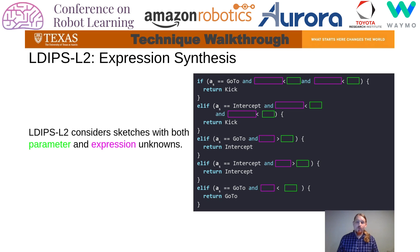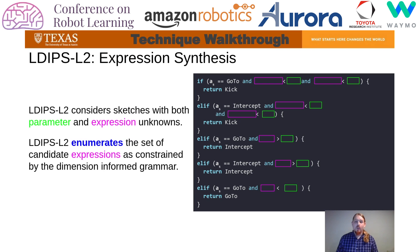At layer 2, LDIPS considers sketches with both parameter and expression unknowns, and seeks to fill in the expression unknowns to form candidate programs before invoking layer 1. Layer 2 uses dimension-informed enumeration, as outlined earlier, to search through the space of candidate expressions until a solution is found.